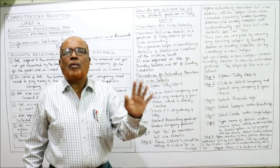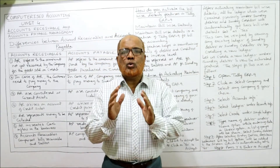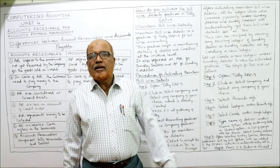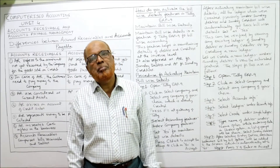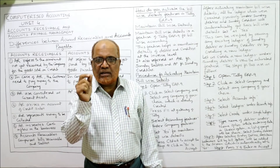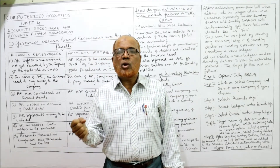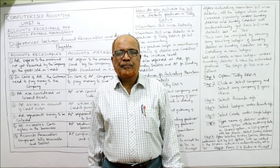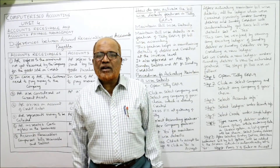Last step: press Y to accept. After verifying that maintain bill-by-bill is set to yes, just accept it. Your new account will be created with the feature of maintain bill-wise details. So in this video I have explained two questions: the differences between accounts receivable and accounts payable, and how to activate maintain bill-wise details.